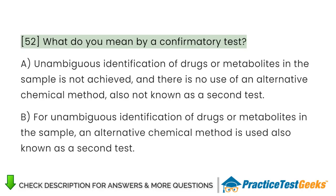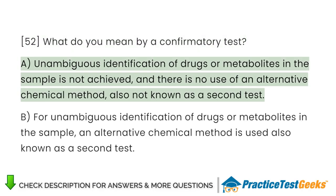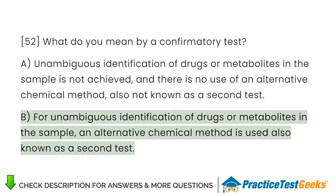What do you mean by a confirmatory test? A. Unambiguous identification of drugs or metabolites in the sample is not achieved and there is no use of an alternative chemical method — also not known as a second test. B. For unambiguous identification of drugs or metabolites in the sample, an alternative chemical method is used, also known as a second test.